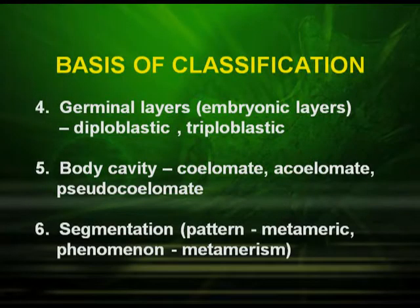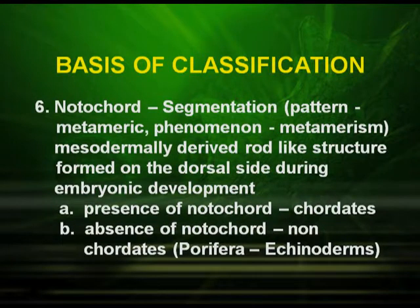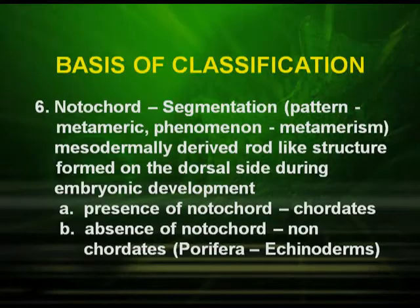In some organisms there is a false body cavity, which is referred to as pseudocoelomate. Segmentation is another important criteria, as found in annelids. In annelids, that is an earthworm, the body is segmented. This pattern of segmentation is known as metameric, and the phenomenon is known as metamerism. The presence of notochord is another important criteria. The notochord is a mesodermally derived rod-like structure formed on the dorsal side during embryonic development. Organisms which possess a notochord are referred to as chordates, and organisms which do not have a notochord are referred to as non-chordates.